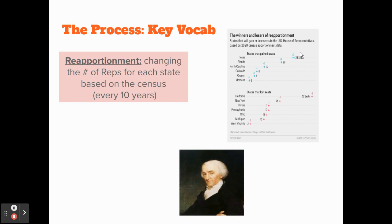The last census was in 2020. Between 2010 and 2020, we assess what states gained in population and what states lost. Because the House of Representatives is frozen at 435, we don't add to that number. Instead, we readjust which state has what share of those 435 seats every 10 years based on census data. That's called reapportionment.